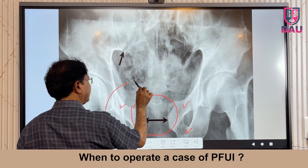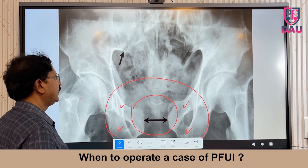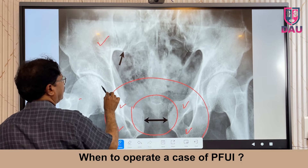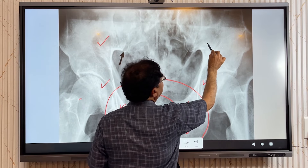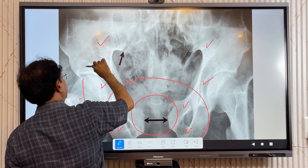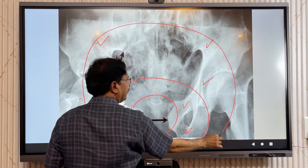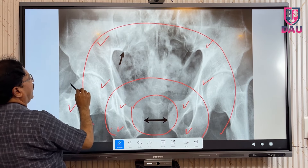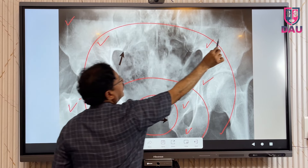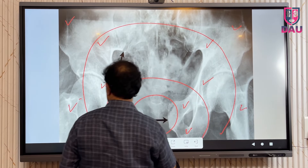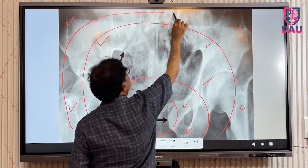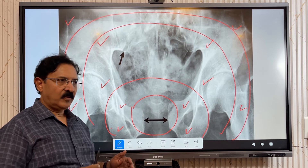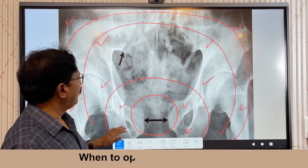Then expand your vision to look at the pubic symphysis and ischial rami on either side. Next, expand further to look at the innominate bone and acetabulum on either side. Finally, look at the neck of femur, trochanter, and iliac crest on either side. If you go from center to periphery in this systematic manner, you will not miss these findings.